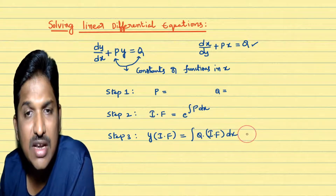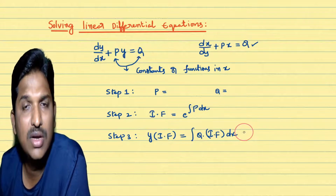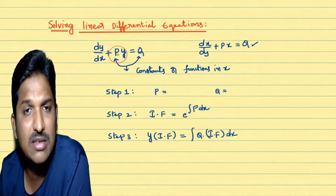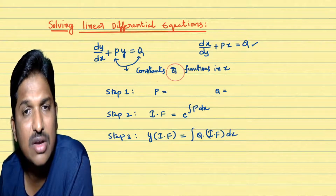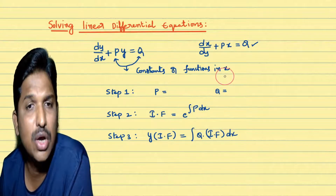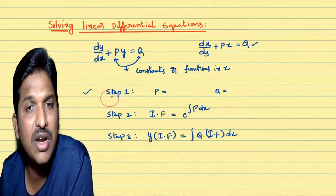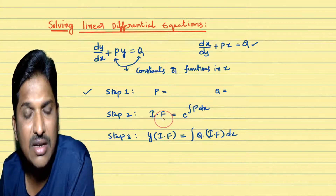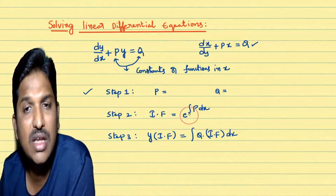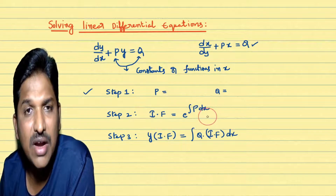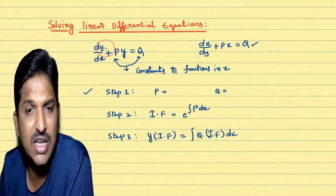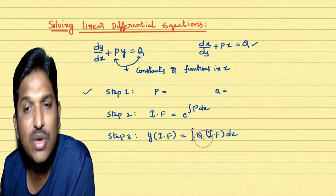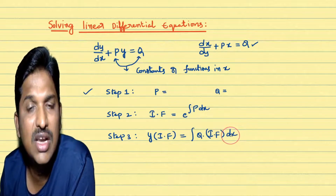Step 3 is the solution of the linear differential equation. How we solve linear differential equation problems: first, we identify that the given differential equation is of the form dy by dx plus py equal to q, where p and q are constants or functions in x. Total 3 steps: Step 1 — identify p and q. Step 2 — calculate the integrating factor using e power integral of p dx. Step 3 — write the solution: y into integrating factor equal to integral of q into integrating factor dx.